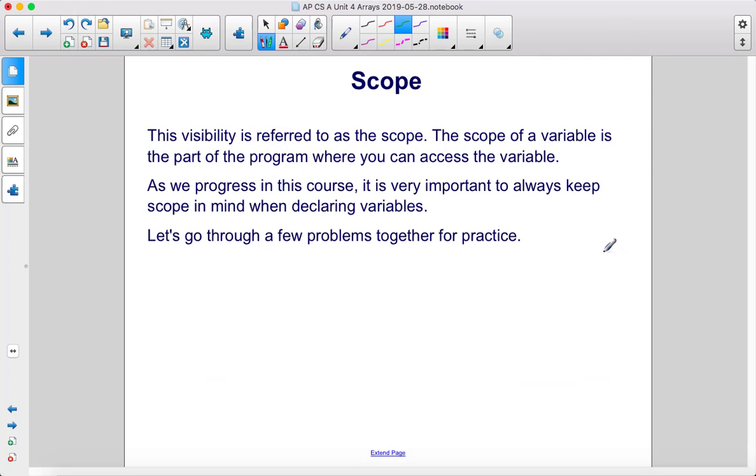This visibility is referred to as the scope. The scope of a variable is the part of the program where you can access the variable. As we progress in this course, it's very important to always keep scope in mind when declaring variables.